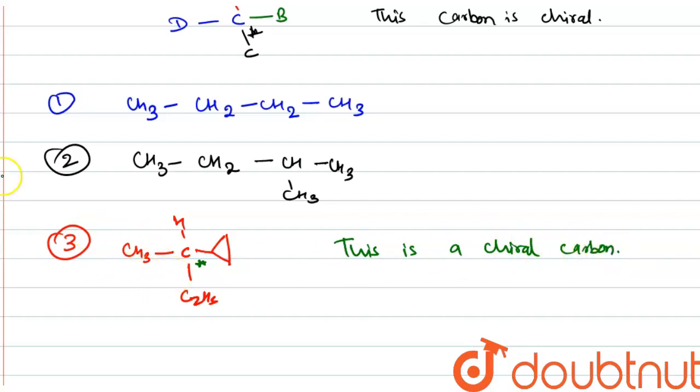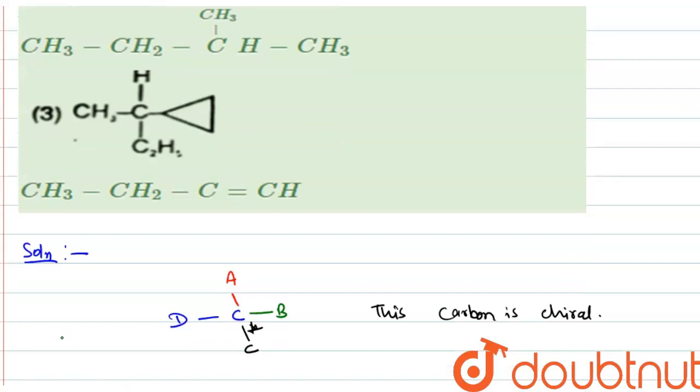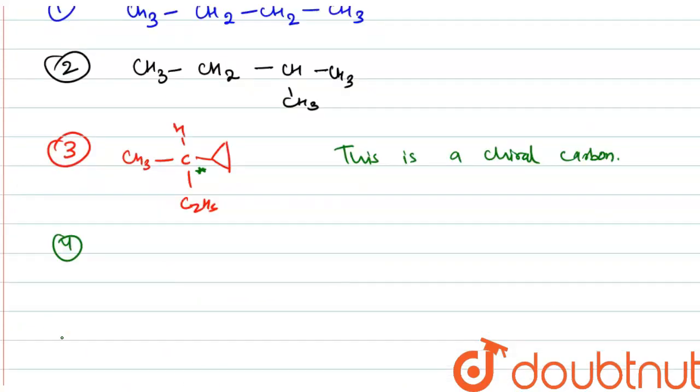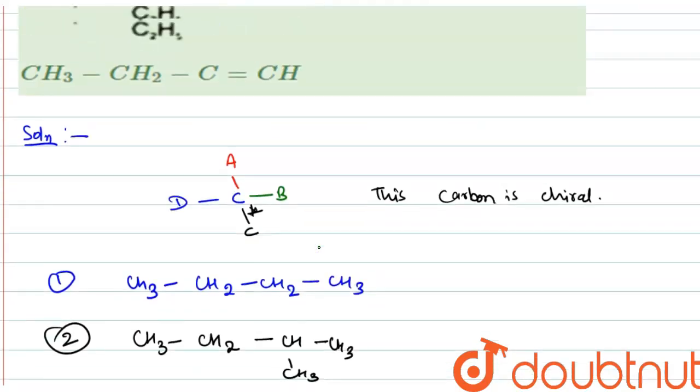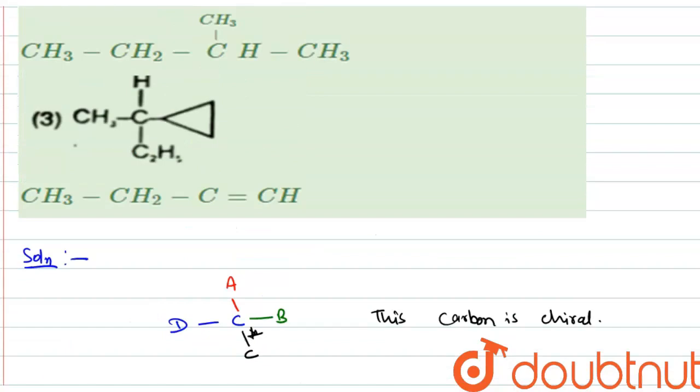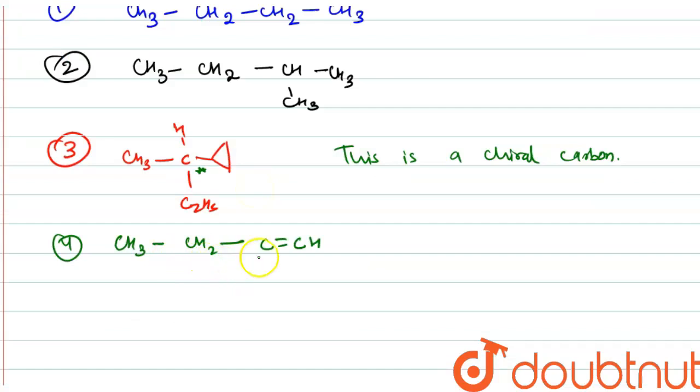So this compound can show optical activity. Let's see the last one, which is butyne: CH3-CH2-C≡CH. It should be triple bond instead of double bond to complete the valency. This is also not a chiral compound because there is no chiral carbon present.